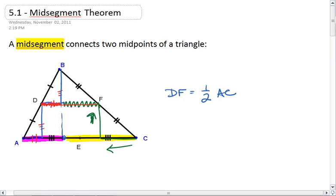That's where we get the conclusion that DF is always going to be half the length of AC. Well, let's look at why the midsegment will be parallel to the third side.